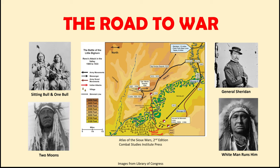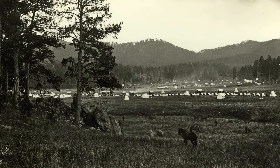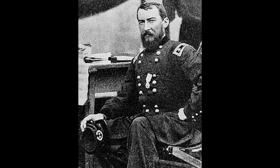In the last video, we covered how the Grant administration had pulled a fast one to initiate a war to subdue the Sioux and northern Cheyenne in order to gain control of the Black Hills. That war would begin in February 1876.